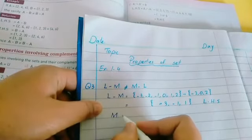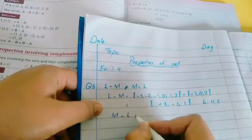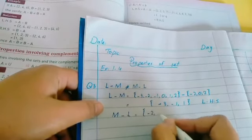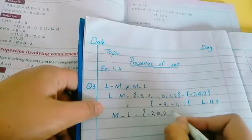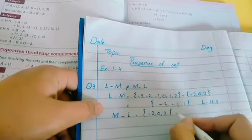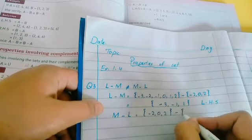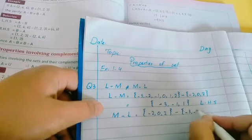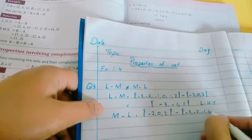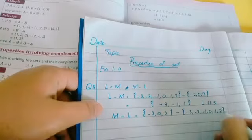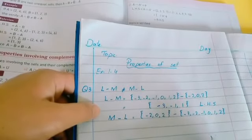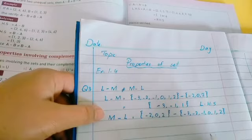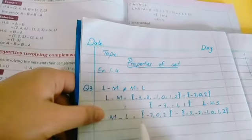Now when we come to the right hand side, we have to find out M difference L. You have to write M set first, that is minus 2, 0, 2, and then put the difference sign and write all the values of L, that is minus 3, minus 2, minus 1, 0, 1, and 2. Your set is closed here.